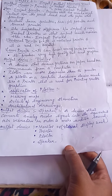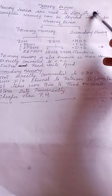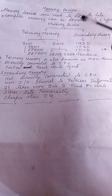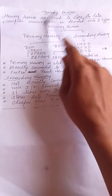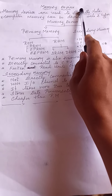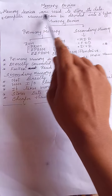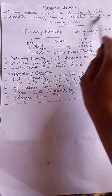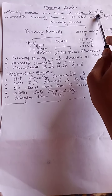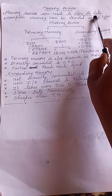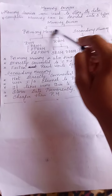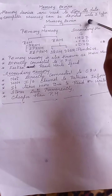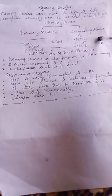Next is memory devices — a very important topic. Memory devices are used to store data. Memory is used for storage; we send information in, memory stores it, and output devices display it.